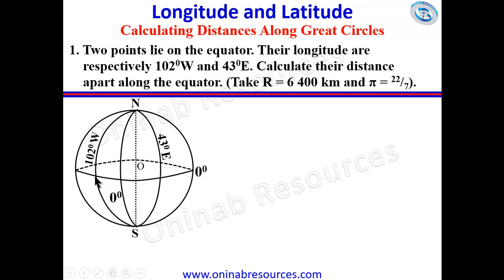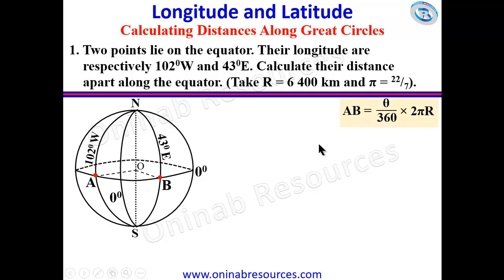If you look at it, the first point is the intersection of the equator and longitude 102 degrees west — we name it A. The intersection of the equator and longitude 43 degrees east we name B. This forms a sector of a circle, sector AOB, where O is the center and the sides are radii of the earth. We are going to find the length of arc AB.